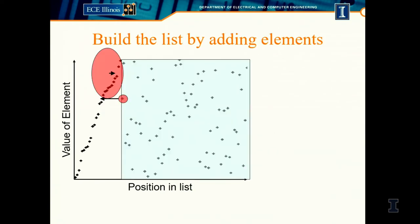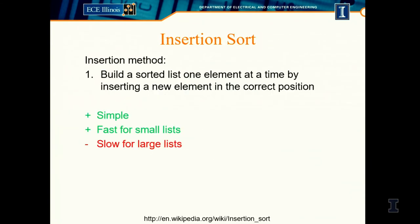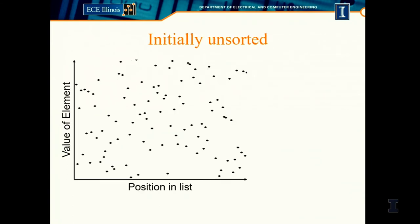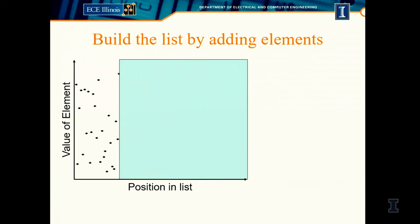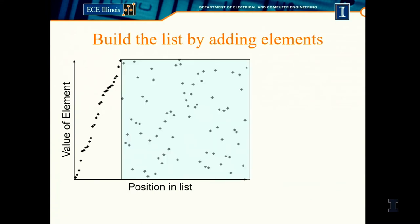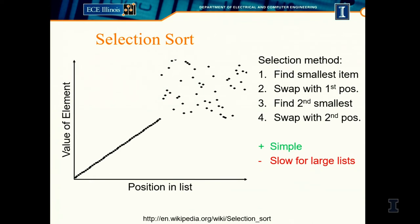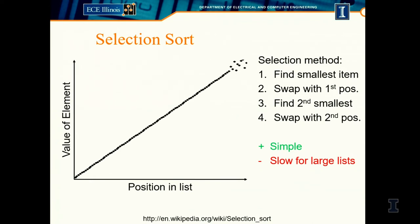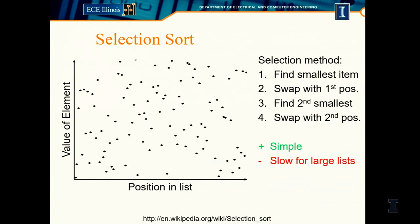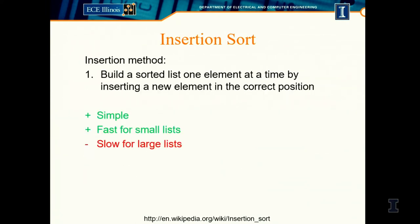Comparing to selection sort: selection sort also sweeps, but it sweeps upward — finding the minimum. Insertion sort sweeps left to right, inserting elements into position. That's the key difference between those two algorithms.